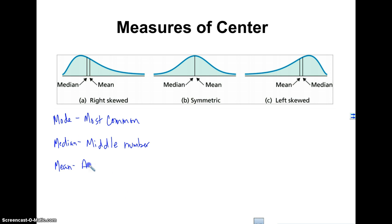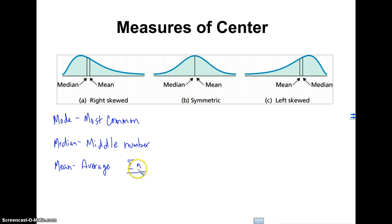The mean is the average. You add up all the terms and divide by the number of elements there are. Sometimes you see it as the sum of the elements divided by n — the number of terms.